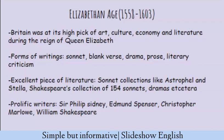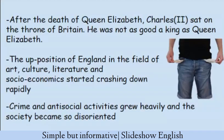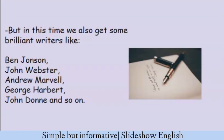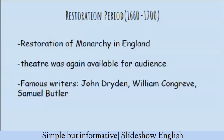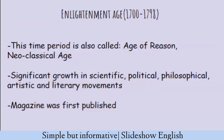After the death of Queen Elizabeth and until Charles the Second came to the throne, there was a kind of political, social, and economical mess in England. Still, we get some excellent writers such as Ben Jonson, John Webster, Andrew Marvell, George Herbert, and John Donne. After Charles the Second became king, the Restoration period starts in 1660. It is called the Restoration period because of the restoration of monarchy and the return of Charles the Second to the throne. Banned theaters were opened again, and John Dryden, William Congreve, and Samuel Butler were the most popular writers of this age.